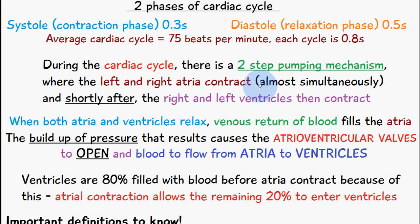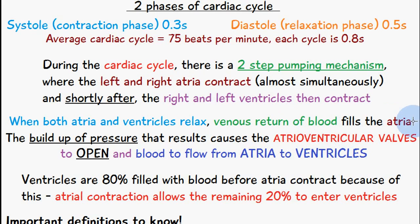During the cardiac cycle there is a two-step pumping mechanism. In this mechanism, the left and right atria contract almost simultaneously, and then shortly afterwards the right and left ventricles contract. First, the atria and ventricles relax, and venous return of blood fills up the atria. As the volume of blood inside the atria increases, the pressure inside the atria also increases.